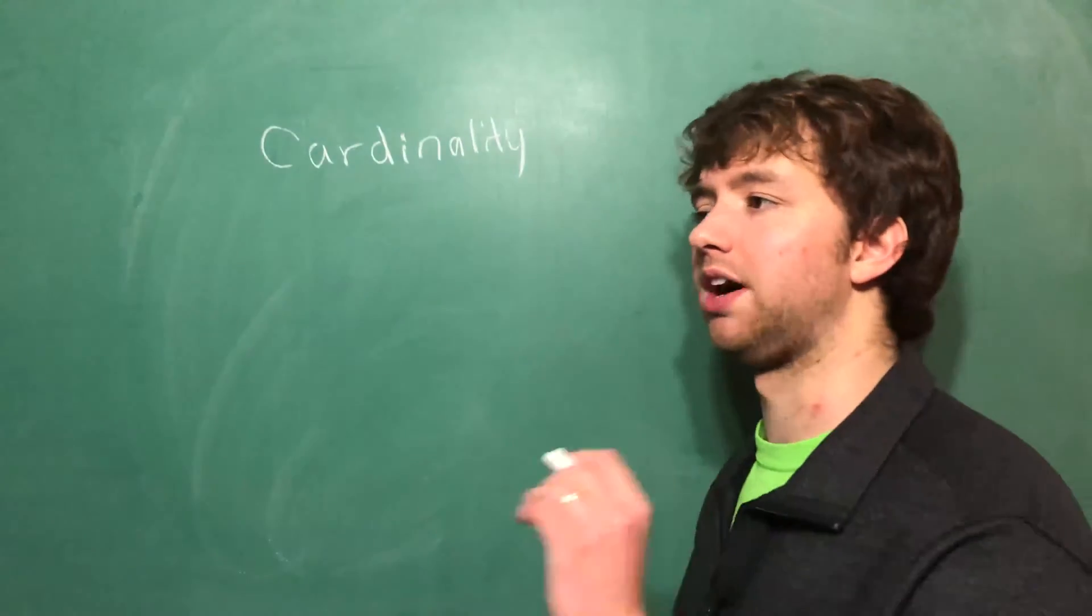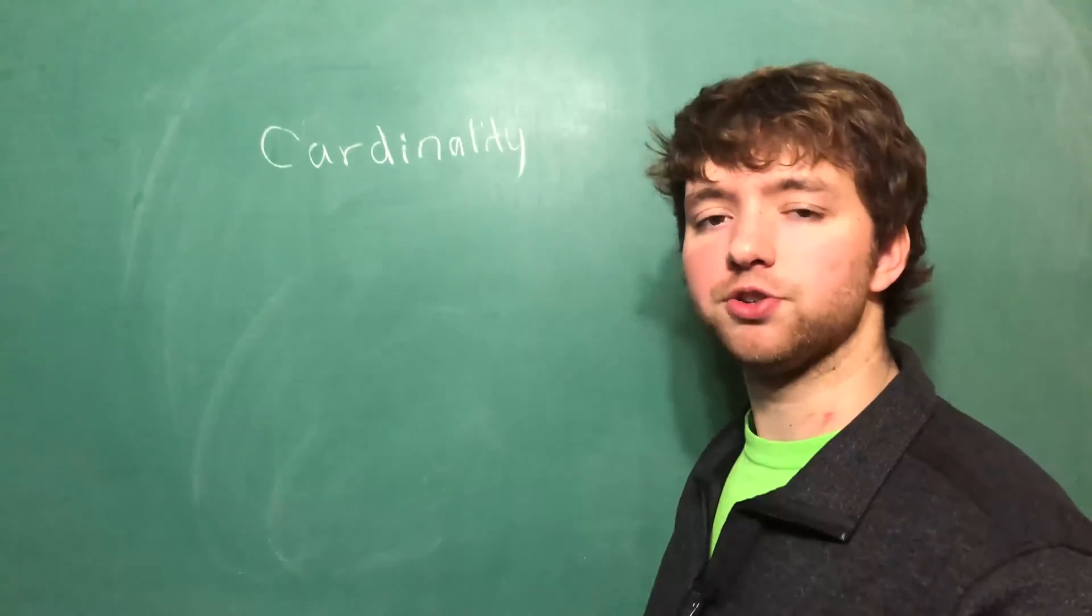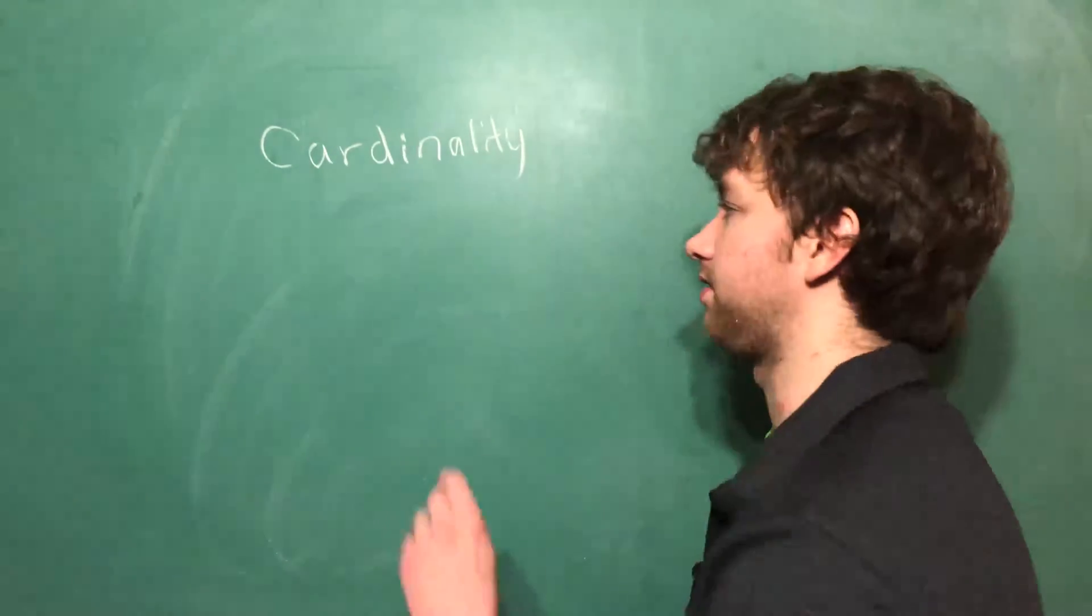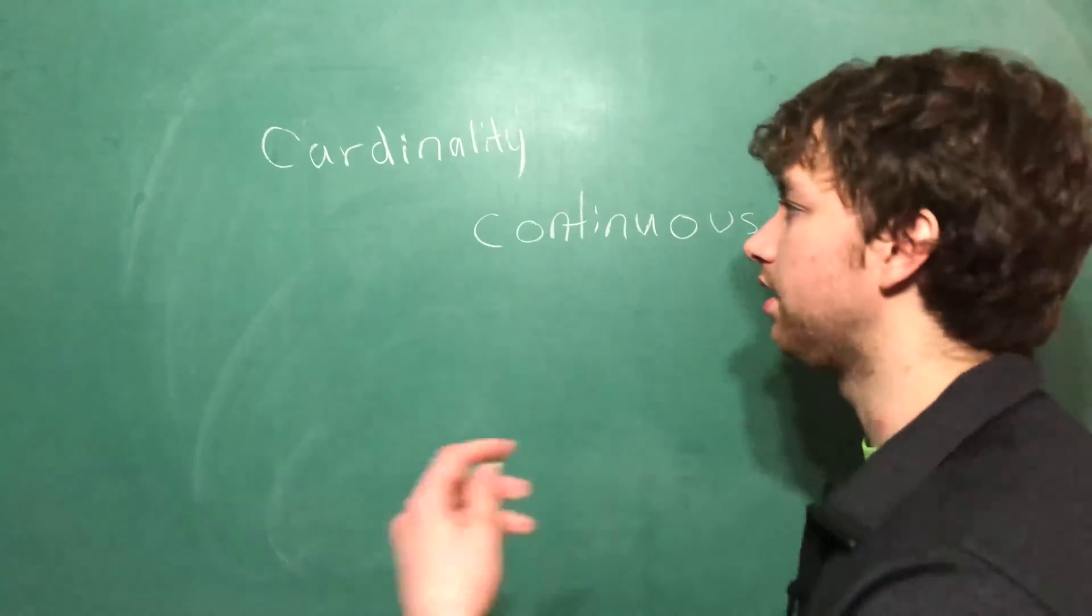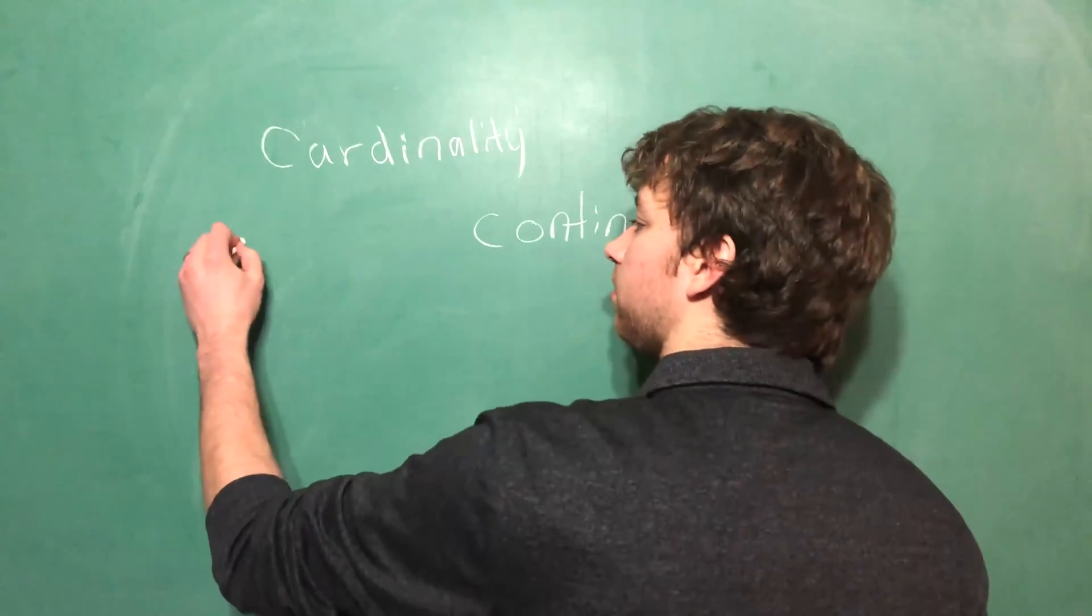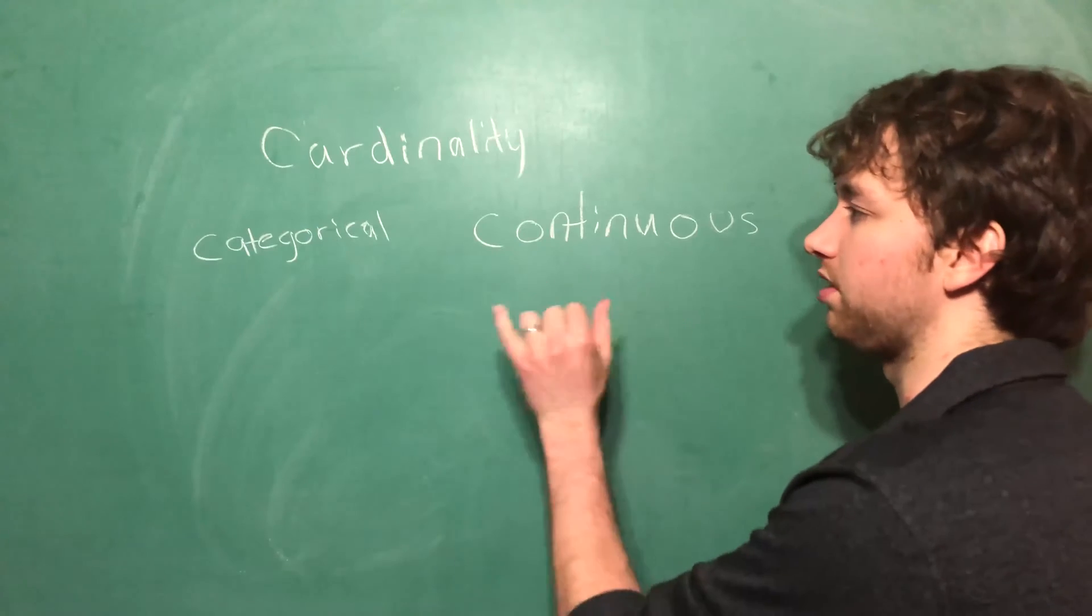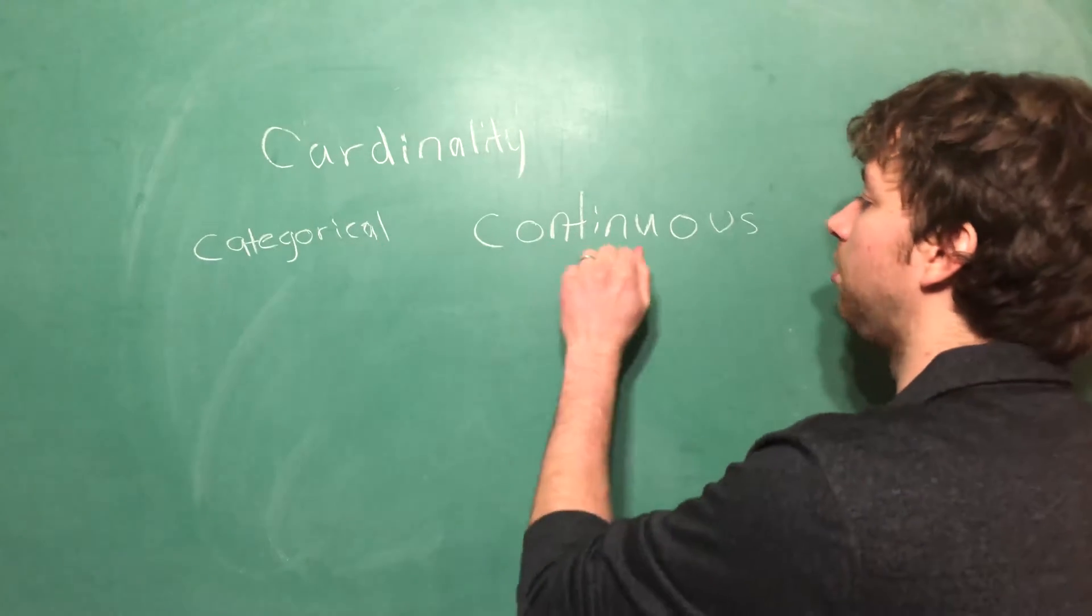Sometimes it's not that simple and you don't have a very small number. Those features are generally known as continuous features. What we had before where there's a few number of options, those are known as categorical. So all features can fit within one of these groups, either categorical or continuous.